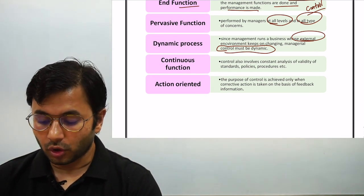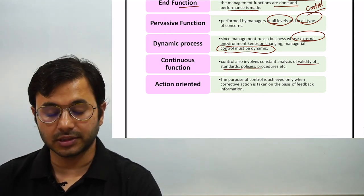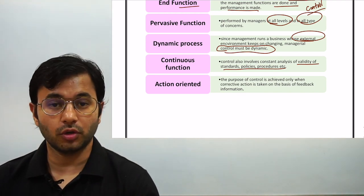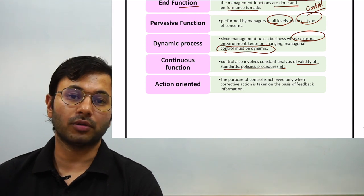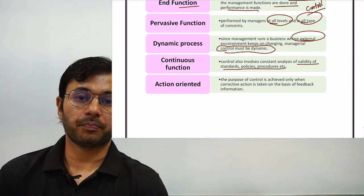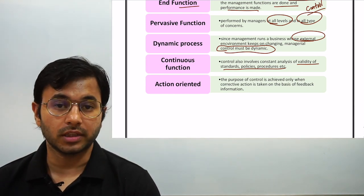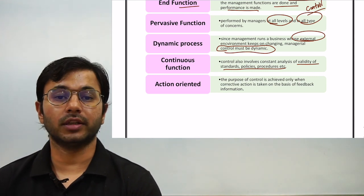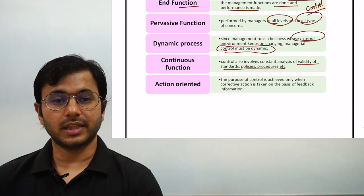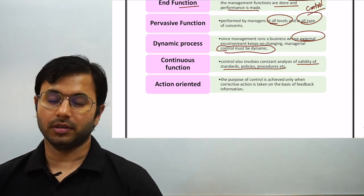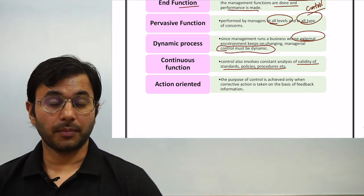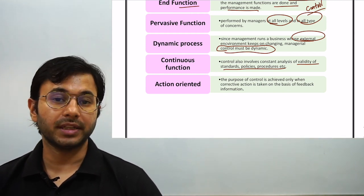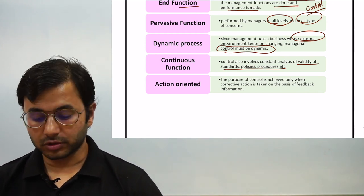Continuous function — control also involves constant analysis of validity of standards, policies, procedures, etc. It is a continuous function which means that it never stops. Control is pervasive, present everywhere in all organizations, and continuous means it never stops — it keeps on going forward. Even when you are involved in the planning function, it does not mean that the controlling function is not working. Simultaneously, in the background, controlling function is also working. For example, with a team of four people, I check their work every day — that is a part of control and a continuous function because every day I am going to measure whether performance is at par with the standards or not.